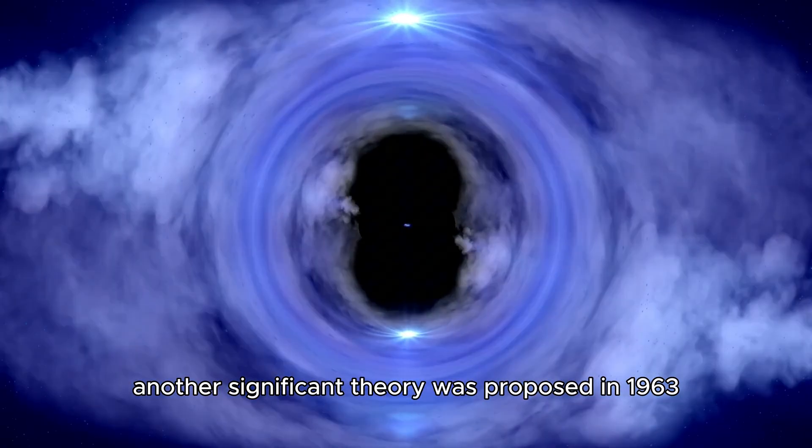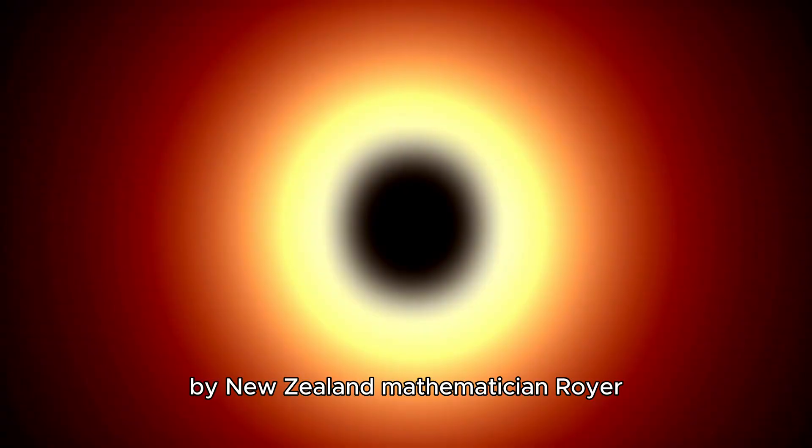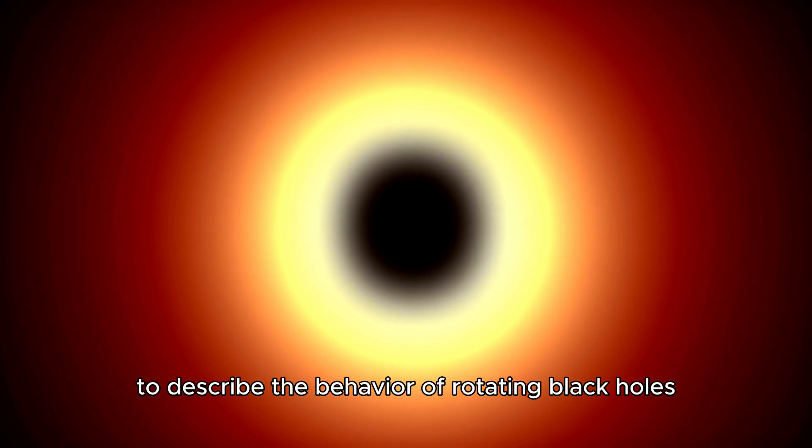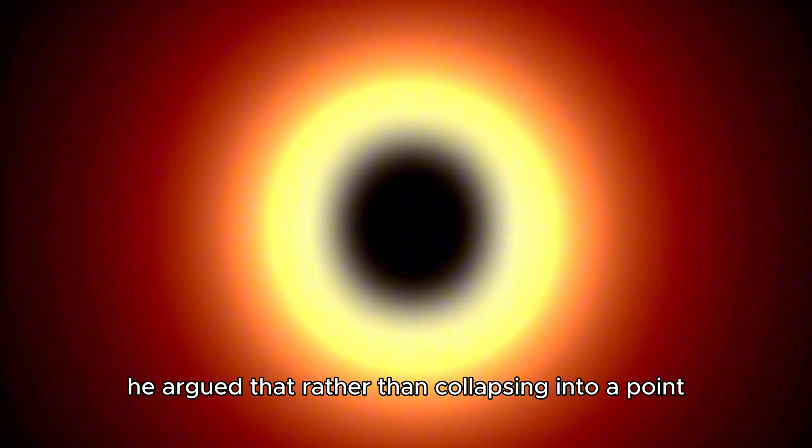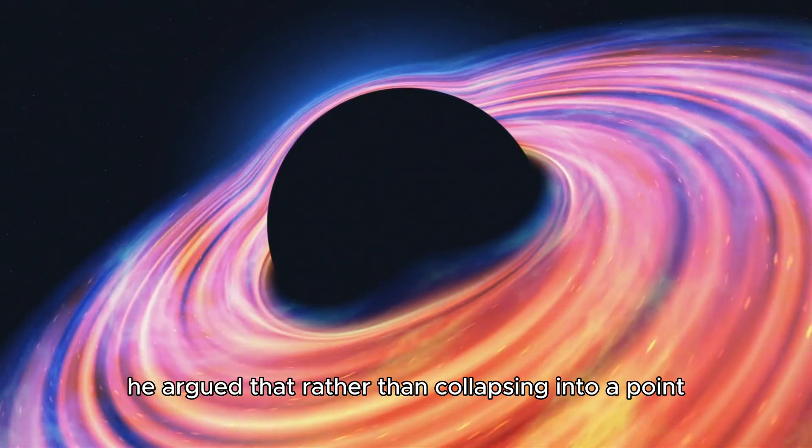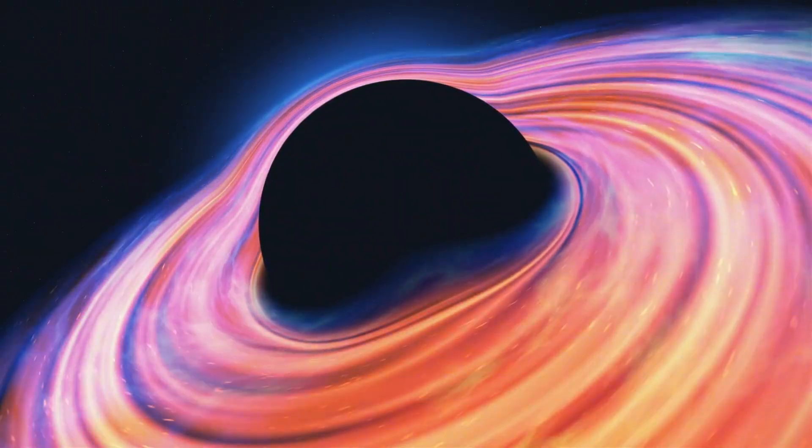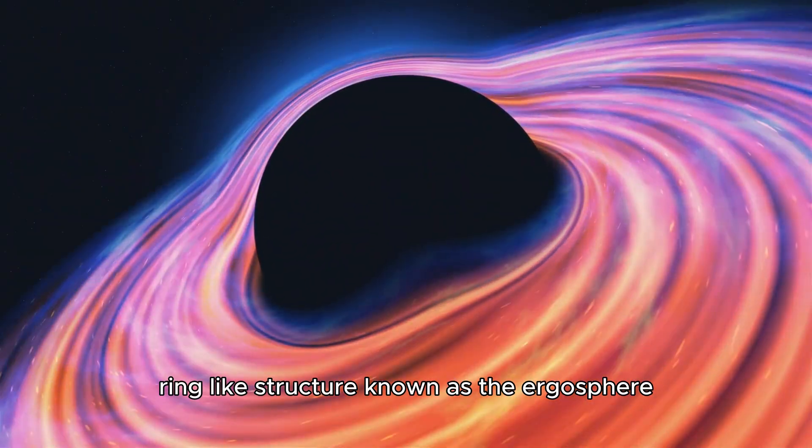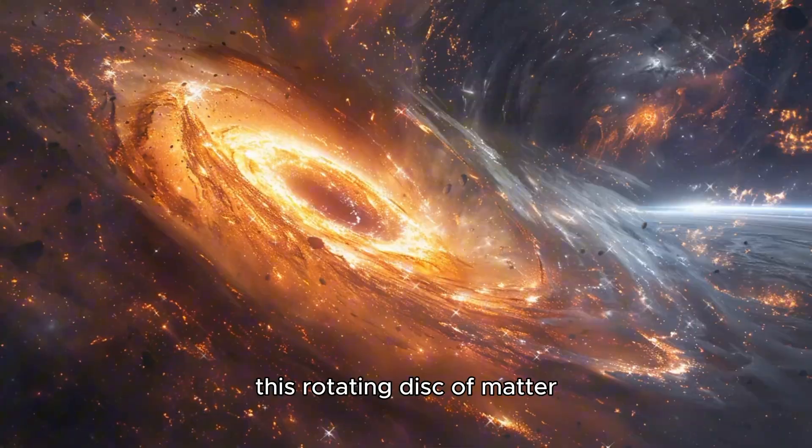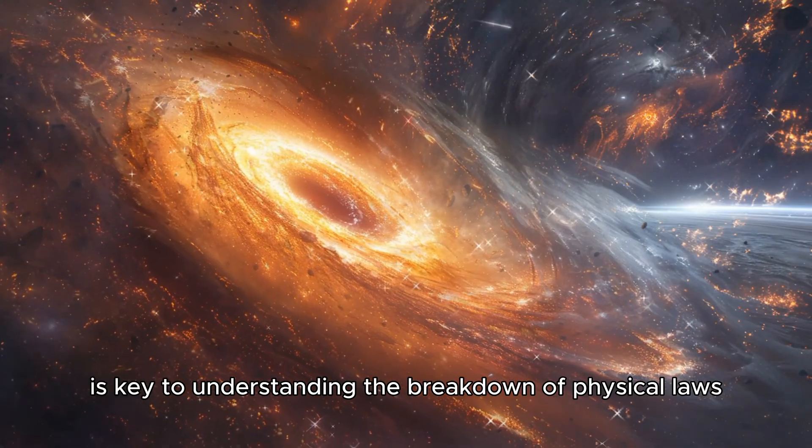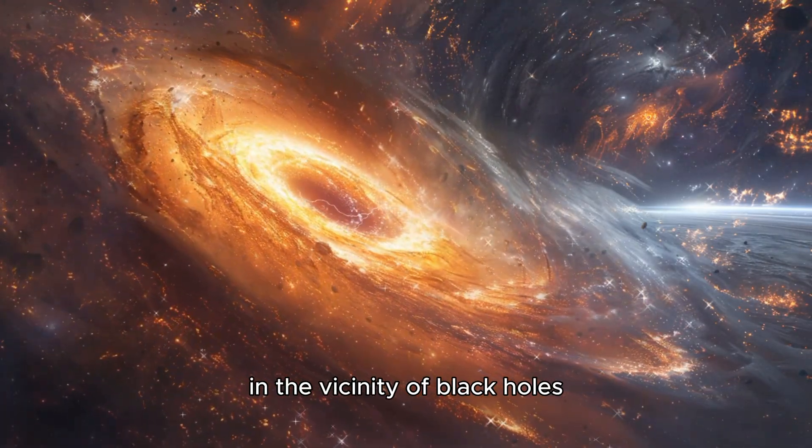Another significant theory was proposed in 1963 by New Zealand mathematician Royer, who used Einstein's equations to describe the behavior of rotating black holes. He argued that, rather than collapsing into a point as previously thought, a rotating black hole forms a thin, ring-like structure known as the ergosphere. This rotating disk of matter is key to understanding the breakdown of physical laws in the vicinity of black holes.